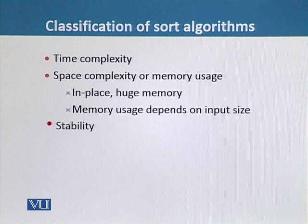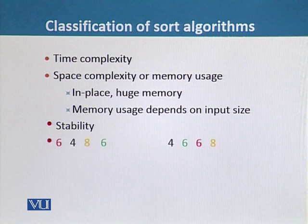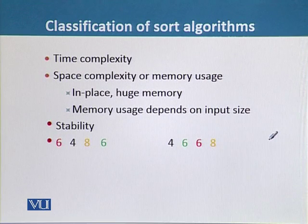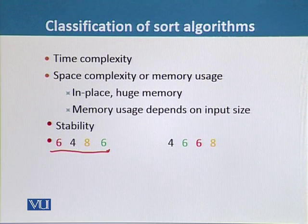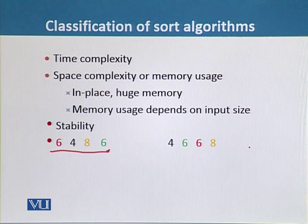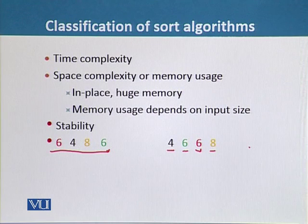The third is stability. To explain this, we have to consider the following numbers. Here we have an array of integers: 6, 4, 8, and 6. If we want to sort it in increasing order, we will get 4 in first place, then 6 and 6, and then the highest integer 8.